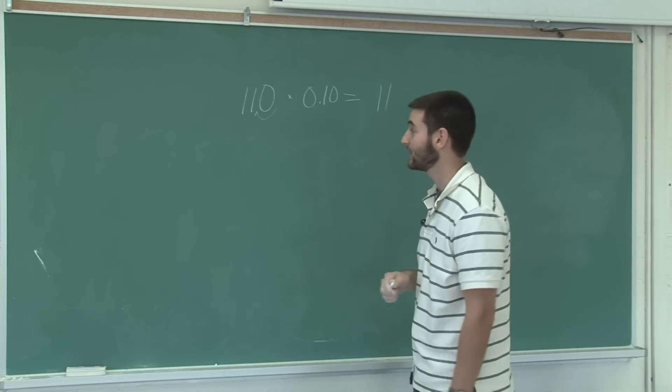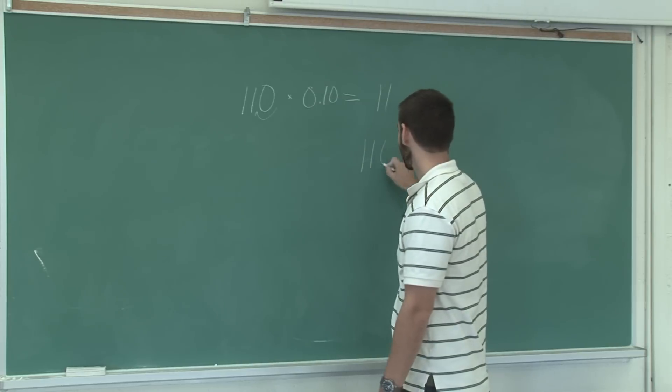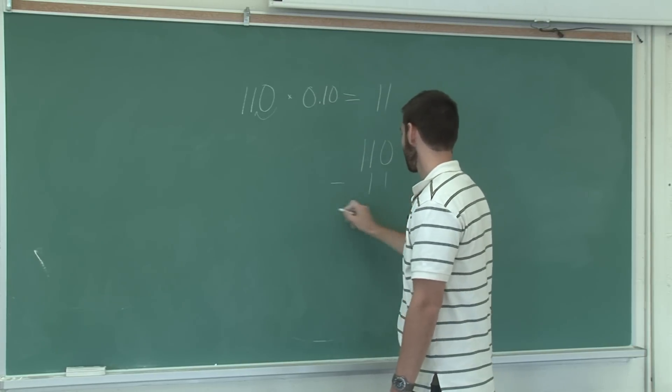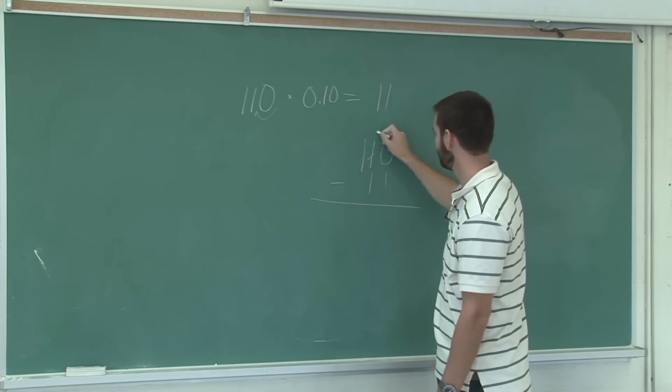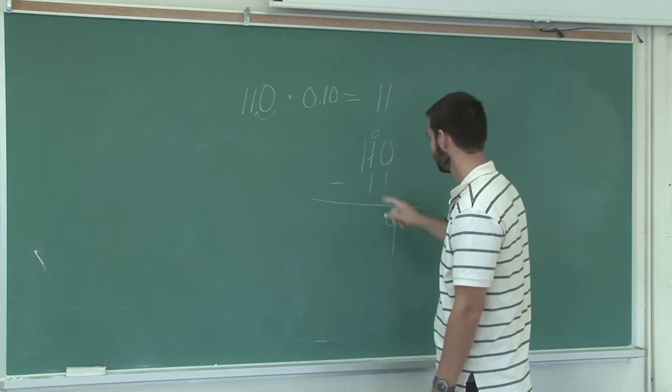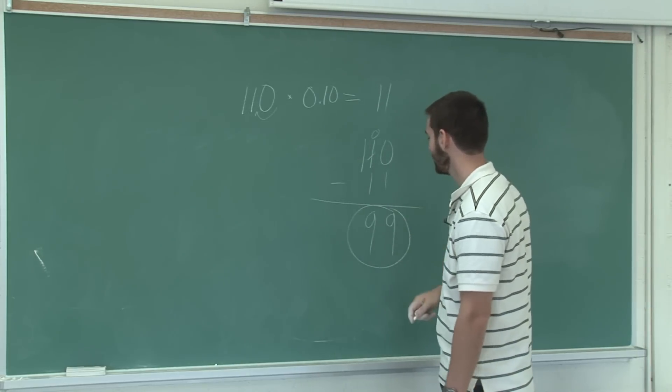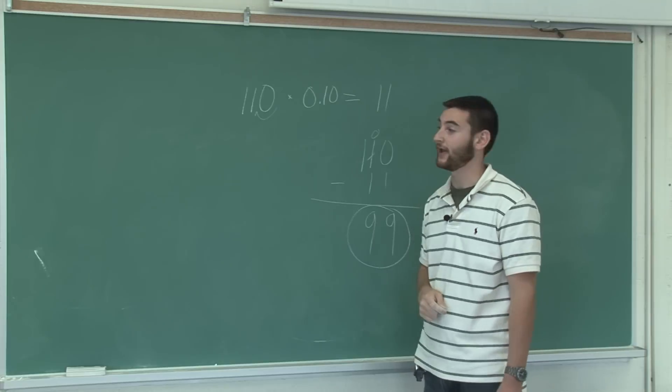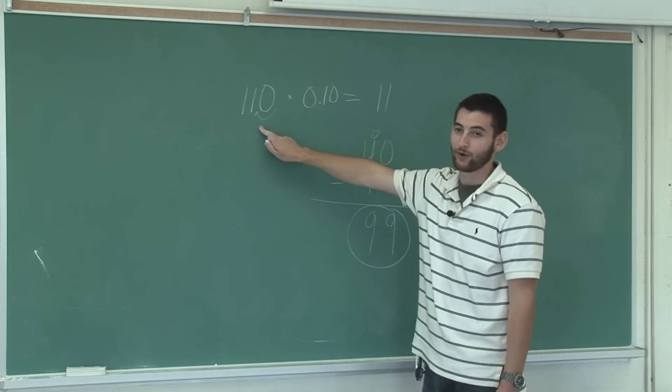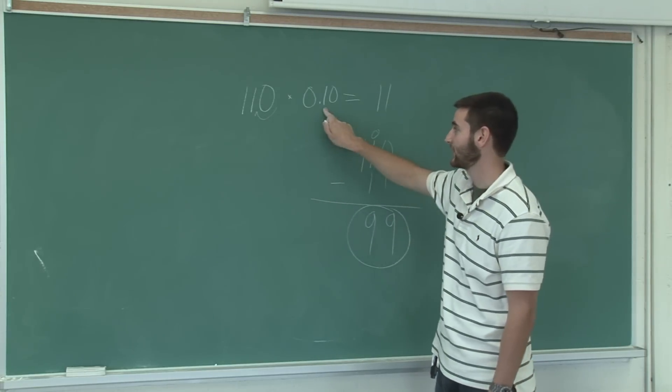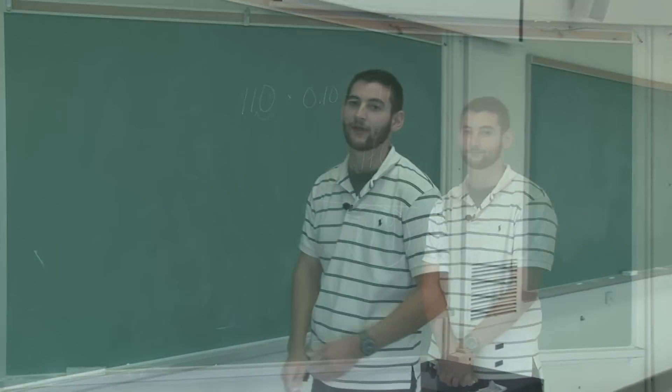So to find out what you'll actually be paying, we subtract $11 from $110, which equals $99. So $99 is the final price you pay after a $110 item has been marked down 10%.